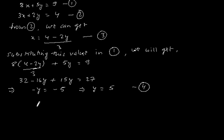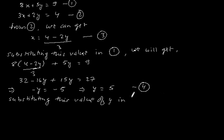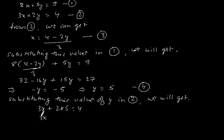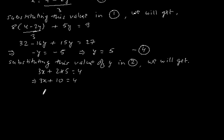Let's say this is equation four. Substituting this value of y in equation 2, we will get 3x plus 2 into 5 is equal to 4, which implies 3x plus 10 is equal to 4, which will give the value of x is equal to minus 2. Hence x is equal to minus 2 and y is equal to 5.